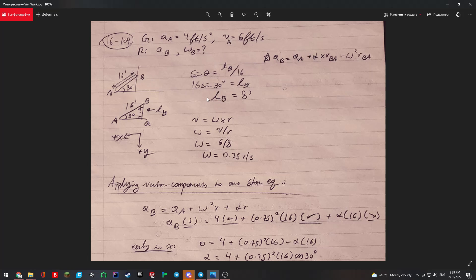Doing a little bit of trig gets us to 8 feet. We can also establish a general equation which is AB equals AA plus alpha cross product with RB with respect to A minus omega squared RB with respect to A.